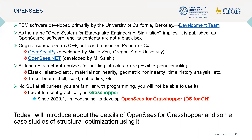Recently, OpenSees.NET has been released and OpenSees is now available from C#. Since Grasshopper components can be written in C#, I developed a component that enables interactive use of OpenSees structural analysis functions on Grasshopper via OpenSees.NET, thereby solving the disadvantage of OpenSees' lack of GUI. Today, I'll introduce the details of OpenSees for Grasshopper and some case studies of structure optimization using it.